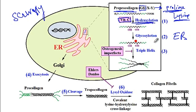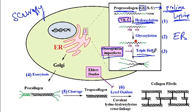In the second step, there would be glycosylation of the polypeptide. And then finally, in the third stage, there is a triple helix that is being formed. In patients that have osteogenesis imperfecta, there is a problem with the formation of the triple helix.